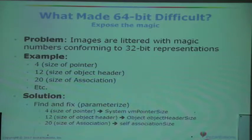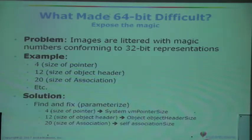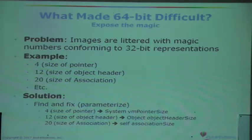The magic numbers: at least in our images we have lots of magic numbers, and we keep discovering more and more as we went through this process. That's a problem because some of these magic numbers relate to sizes of things that involve pointer sizes. Four was a very common magic number — it could be the size of a pointer, or it could be something totally unrelated to pointers. If it's the size of a pointer it needs to be made dynamic so that on a 32-bit image it's 4, on a 64-bit image it's 8. If it's the size of something in your application that has nothing to do with pointers, it has to be left alone.